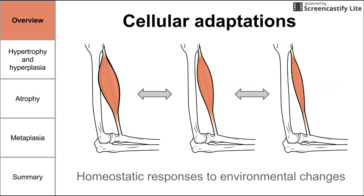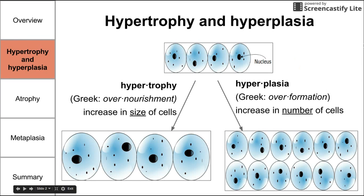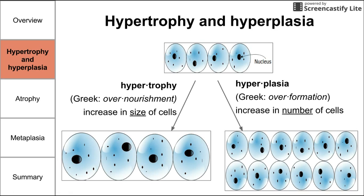I'll be discussing the mechanisms that can cause changes like those shown here. Let's start with mechanisms in which tissues, and thus organs, are enlarged or become bigger. There are two ways this can happen. The first is hypertrophy, literally meaning overnourishment, which is an increase in the size of cells making up a tissue or organ. You can see this on the left side of the diagram, where the four cells are increased in size during hypertrophy.